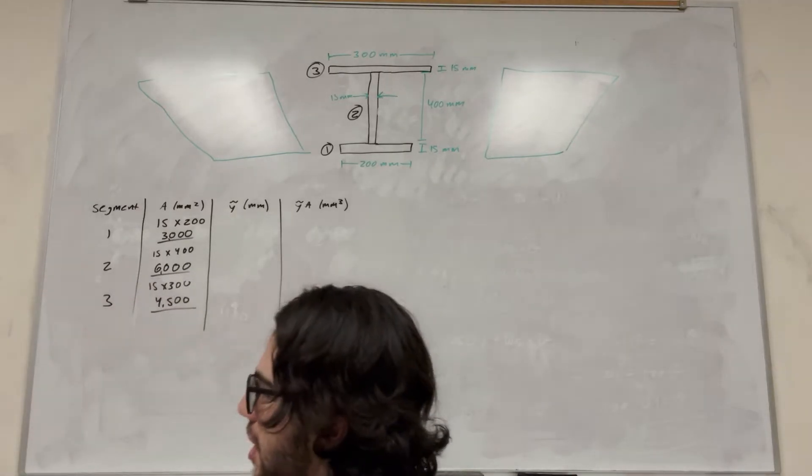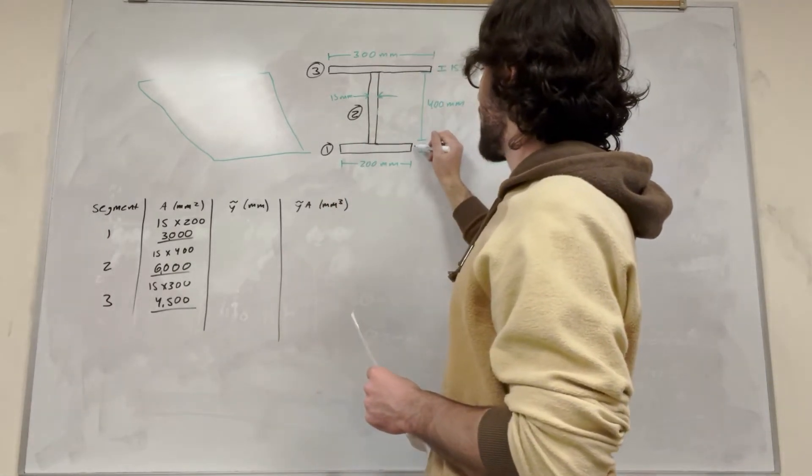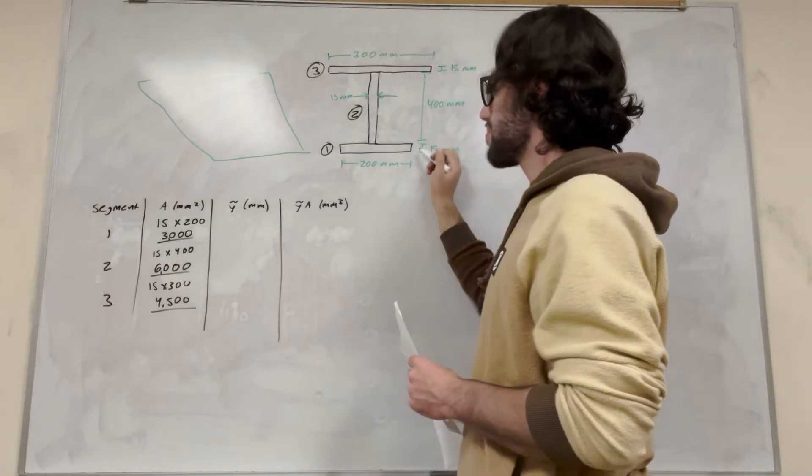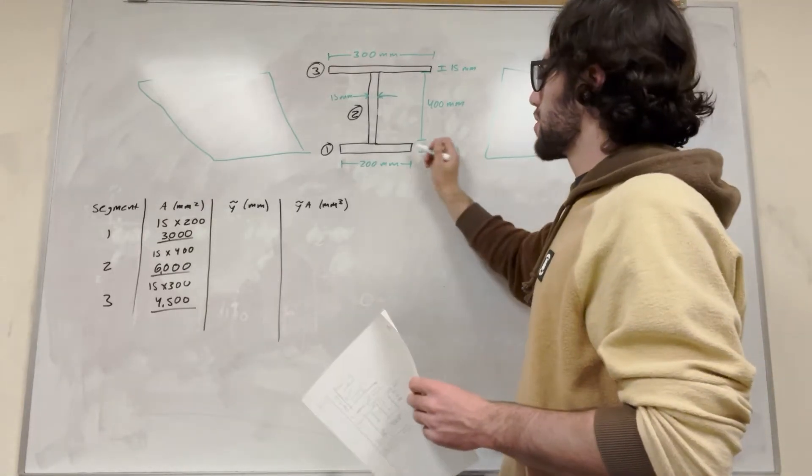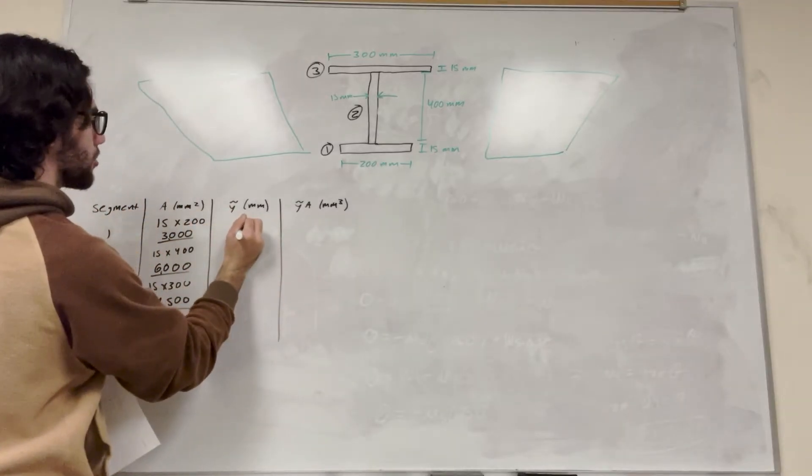So now we need to find the center of mass of all of these. So we're looking for the center of mass in the y direction. So the center of mass here, the center of mass of this one, the center of mass of this one. So starting with one, if it's 15 tall, its center of mass is going to be in the center because it's a rectangle. So we're taking half of 15. So we know that it's going to be 7.5.